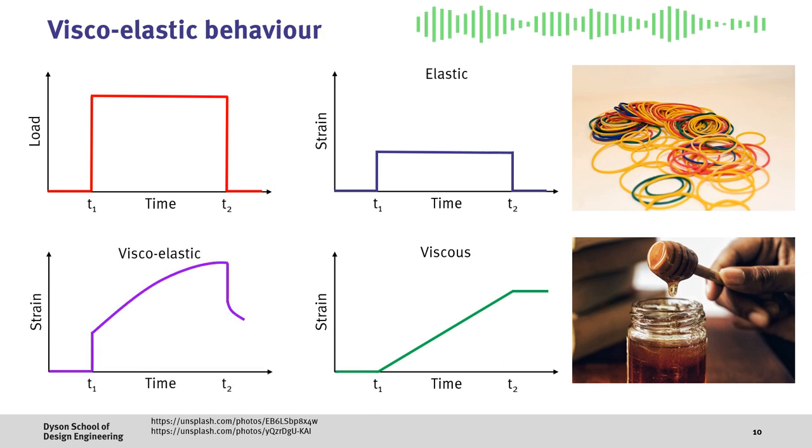A viscoelastic material is therefore a material which exhibits both elastic and also viscous behavior. Here, we can see an elastic response at t1, but then as the load is held, the strain in the material increases, and then when the load is removed at t2, we get an elastic recovery of the material.